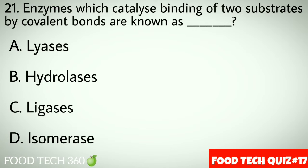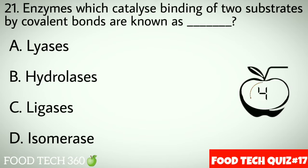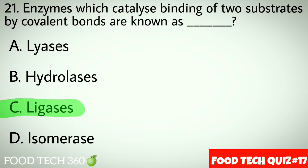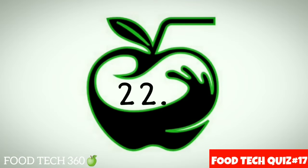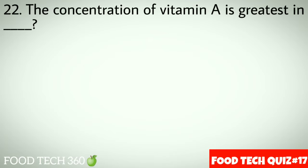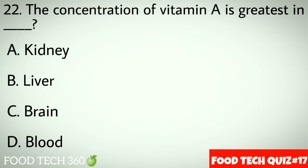Question number 21: Enzymes which catalyze binding of two substances by covalent bonds are known as dash. Options: A. Lyases, B. Hydrolyases, C. Ligases, D. Isomerase. Correct answer: C. Ligases.